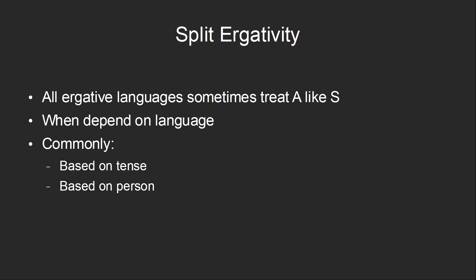All ergative languages treat the agent like the subject in at least some situations, although which situation depends on the specific language. This is called split ergativity. One of the most common ways to split ergativity is based on tense. It's common for a language to use ergative alignment in the past tense but nominative-accusative alignment in the present tense.